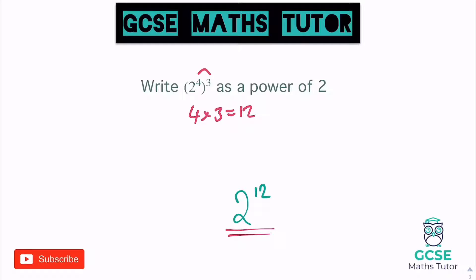So when we've got these brackets, we can just multiply the powers to get our two to the power of twelve. But again, you don't have to write that out in the big long way that I did. As long as you remember that little rule — we can just multiply them — we get two to the power of twelve.